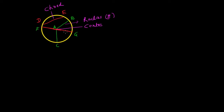In addition to all these terms, there is one more interesting term used in circle, and that is known as the circumference. If you start at point F and go all the way around the circle, that overall distance is known as the circumference of the circle.